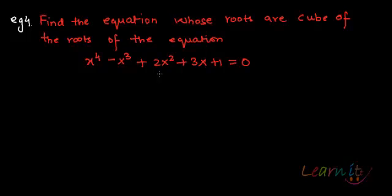I am given a bi-quadratic equation x^4 - x^3 + 2x^2 + 3x + 1 = 0 and alpha, beta, gamma, delta are roots of this equation.